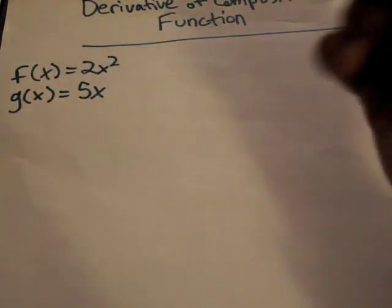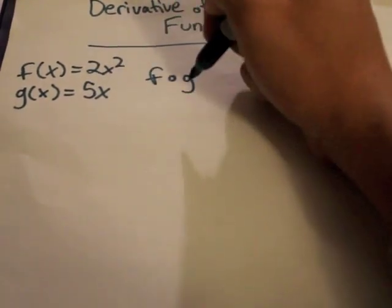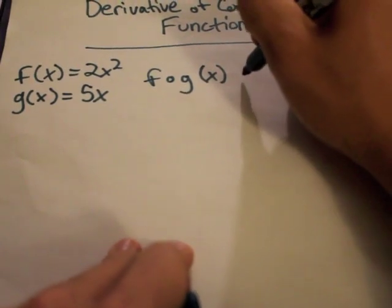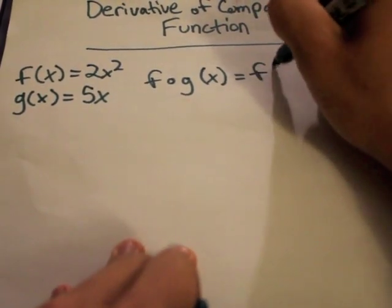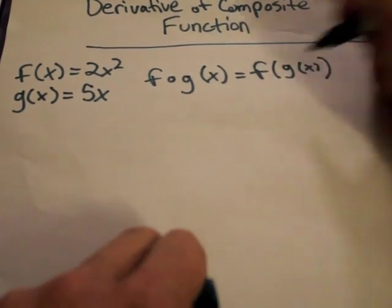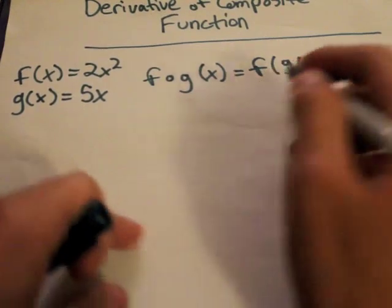And let's say you wanted to take the function of those. If you have the function of g of x, it's the same thing as f of g of x. And that can look a little weird, but let's take this one step at a time.